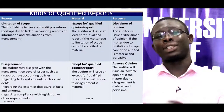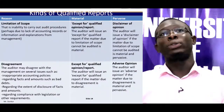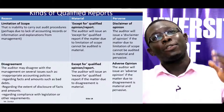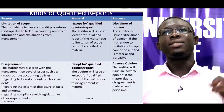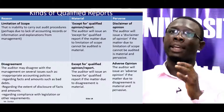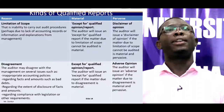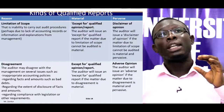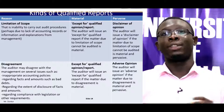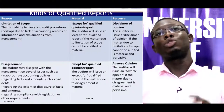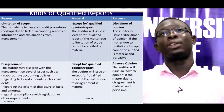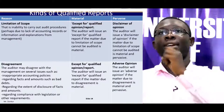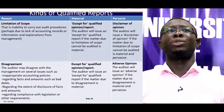To understand the various types of qualified report, let's look at this table. The table has two key reasons: limitation of scope and disagreement, and two columns: material and pervasive. We will use these combinations — limitation of scope and disagreement with material and pervasive — to determine the appropriate type of qualified report to issue in each circumstance.